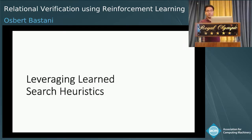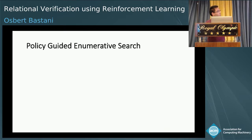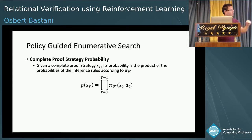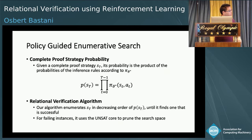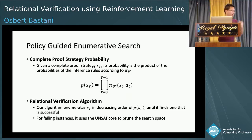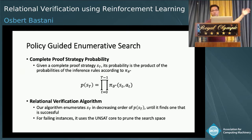Once we learn this neural network, we leverage it to speed up the search process by using the policy probabilities to guide the enumerative search. Given a complete proof strategy, we define its probability as the product of the probabilities of the inference rules used to construct that proof strategy according to the learned neural network policy. Our relational verification algorithm enumerates proof strategies in descending order of these probabilities — trying the most likely one first and continuing until it finds a successful one. Additionally, for failing instances, we can use the unsat core from the solver to help prune the search space, which also helps speed things up.